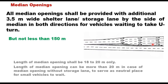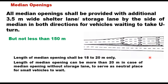Length of median opening shall be 18 to 20 meters. It can be more than 20 meters in case of median opening without storage lane, to serve as a neutral place for small vehicles to wait. At median openings, all plantations and objects in the median shall be removed, and the median shall be paved for the entire length of the right-turning storage lane including taper, or the length equivalent to safe stopping sight distance based on design speed, whichever is higher, from the median tip to ensure visibility between approaching and waiting turning vehicles.